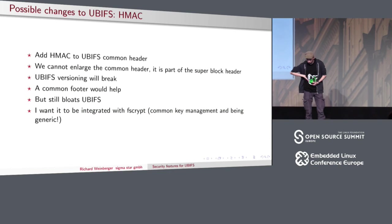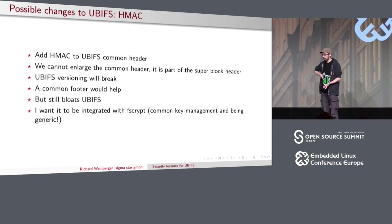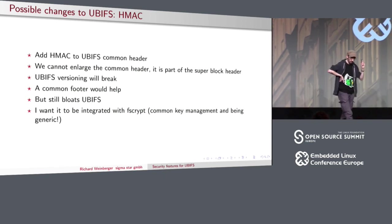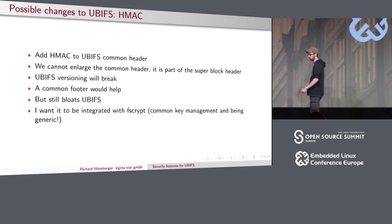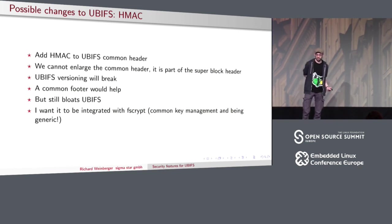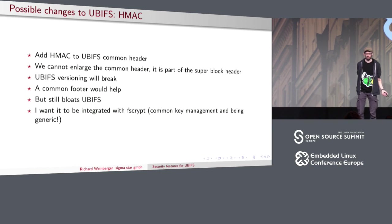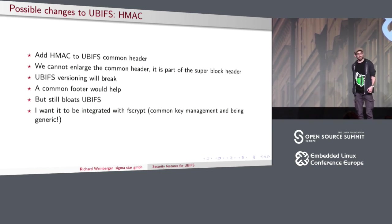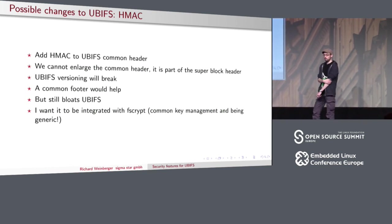One possible solution is to add an HMAC to each UBIFS node. UBIFS has a common header present in every node, and in the UBIFS write path we'd sign every file system node — that would authenticate the whole system. It's doable, but a reasonably strong HMAC is 64 bytes, and bloating every single UBIFS node by 64 bytes is not something I want — UBIFS nodes are usually rather small, just a few bytes, except for the larger data nodes.